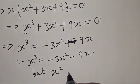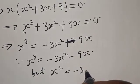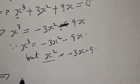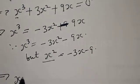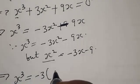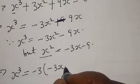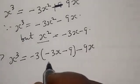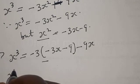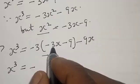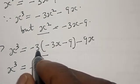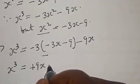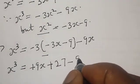Now, s squared is equal to minus 3s minus 9. Substituting into our expression, s raised to power 3 is equal to minus 3 times the quantity minus 3s minus 9, minus 9s. Opening the brackets: minus 3 times minus 3s gives plus 9s, and minus 3 times minus 9 gives plus 27, minus 9s.